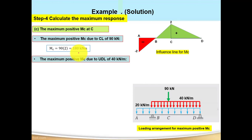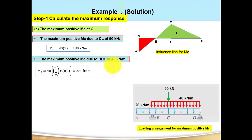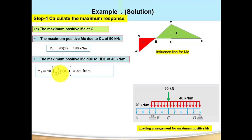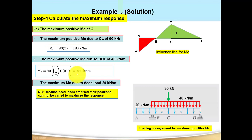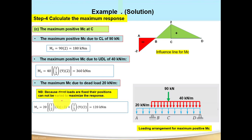Maximum positive M_C due to 40 kN/m distributed load: multiply intensity by the area of the positive influence line region (between B and D, two triangles sharing height 2). Area = (1/2)(9)(2) = 9 m, so M_C = 40 × 9 = 360 kN·m. Maximum M_C due to the dead load of 20 kN/m (full beam, including negative region between A and B): M_C = 120 kN·m.